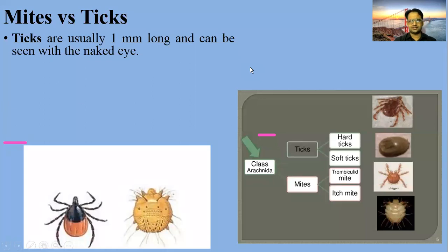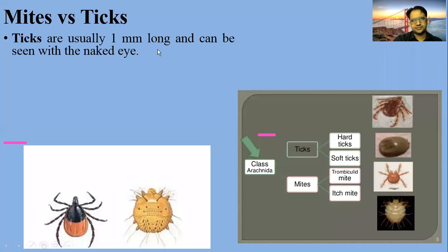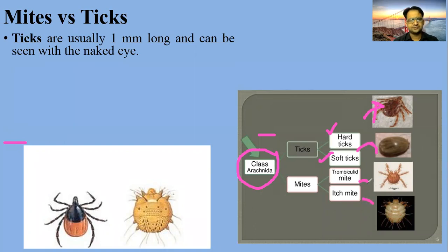Mites and ticks are two associated arthropod members of Class Arachnida. They are usually ectoparasites; in most cases non-human mammals are infected, and sometimes humans are infected as well. Ticks include hard ticks and soft ticks, while mites include different itch mites and thrombiculid mites.